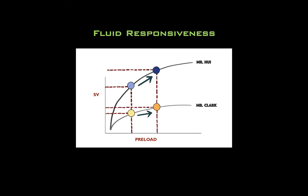Mr. Clark has a history of heart failure with an EF of 10%, whereas Mr. Hui demonstrates reasonable left ventricle systolic function on bedside echo but has a nephrotic syndrome with an albumin level of 15. The same half litre bolus may not result in a meaningful increase in Mr. Clark's stroke volume, especially if he's on that flat part of the Frank-Starling curve. In fact, it may worsen heart failure and tissue edema. Therefore, he may not be volume responsive and may also not be fluid tolerant.